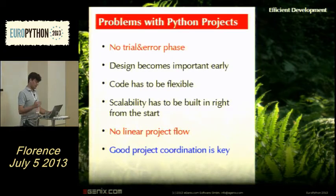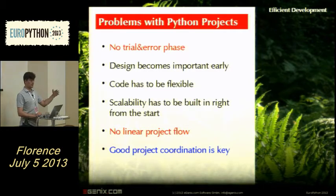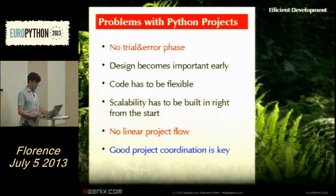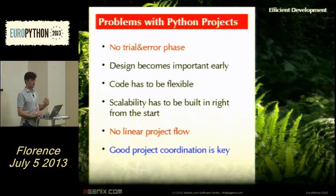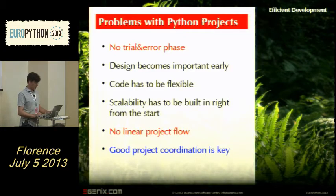Of course, changing the standard IT project model also brings problems. The major problem is that you no longer have a trial-and-error phase. Because your prototype turns into your actual product, you need to be very careful when writing it. You need to focus on design, and the code has to be very flexible since you might need to make changes. Scalability is also very important and has to be built into the design from the start.